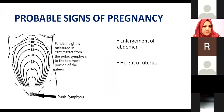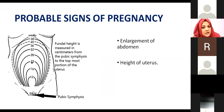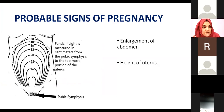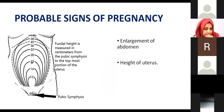The probable signs are those you can detect on examination as the pregnancy progresses. The first probable sign is enlargement of the abdomen. You can do external examination for visible abdominal enlargement, but not necessarily conclusive — sometimes a female who is obese or has ascites may also have an enlarged abdomen.